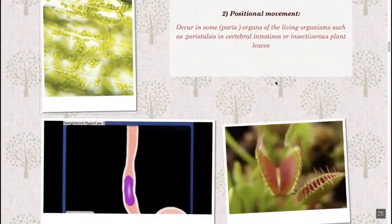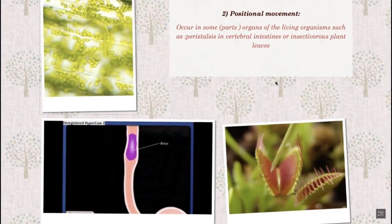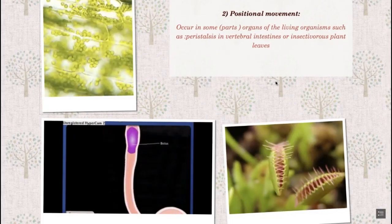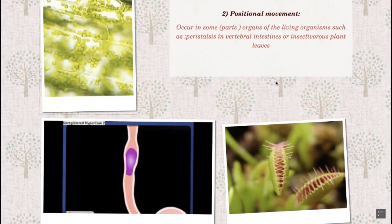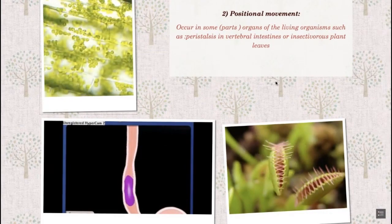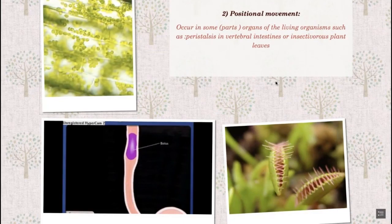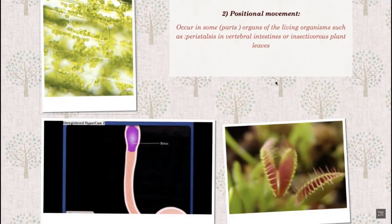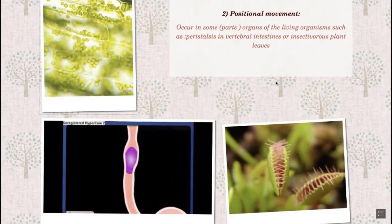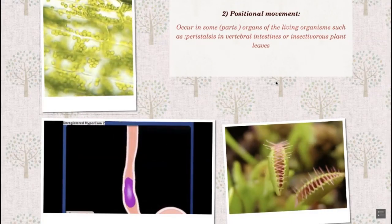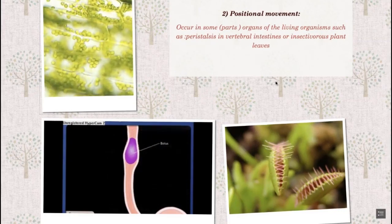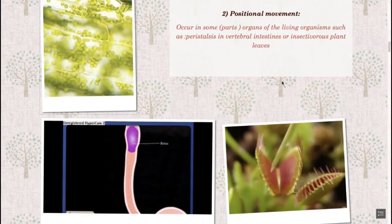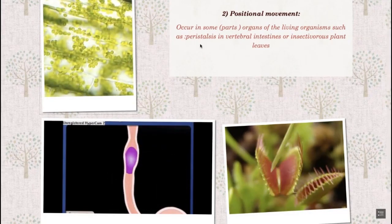Number two: positional movement. It occurs in some parts or organs of the living organism. For example, rhythmical contraction and relaxation of the esophagus. This is a process of being able to move food through the digestive system, the alimentary canal. It happens to be a contraction and relaxation so that the food can move through the body. We can call it peristalsis - contraction and relaxation.